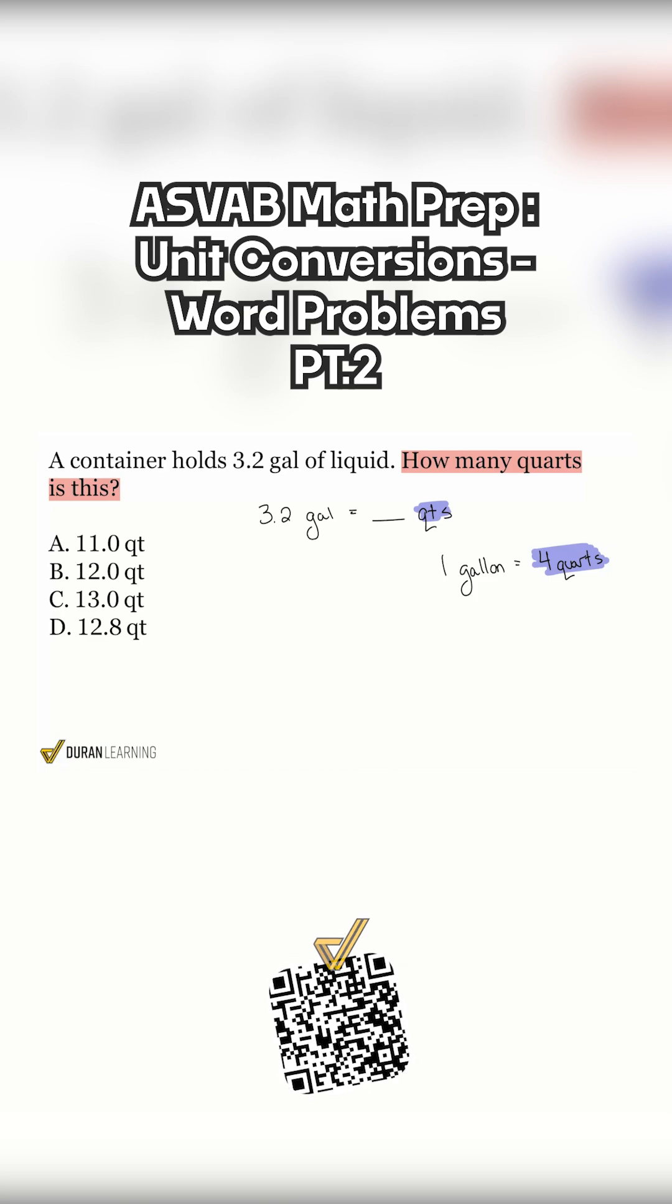If we were trying to get to gallons, that's a one on it, and we would be dividing in that case. But in this case, we'll multiply. So that means we'll do 3.2 multiplied by four, by that number that we have right there, our conversion rate, nice and easy.